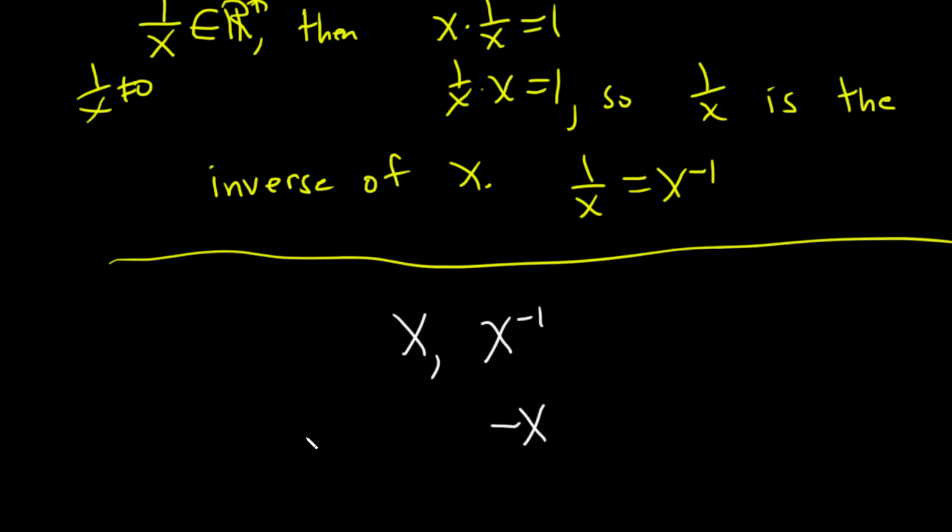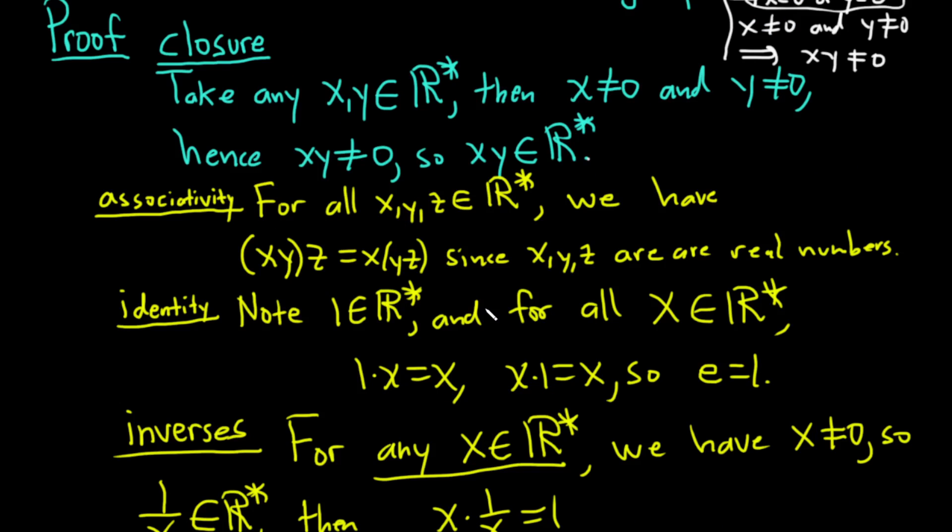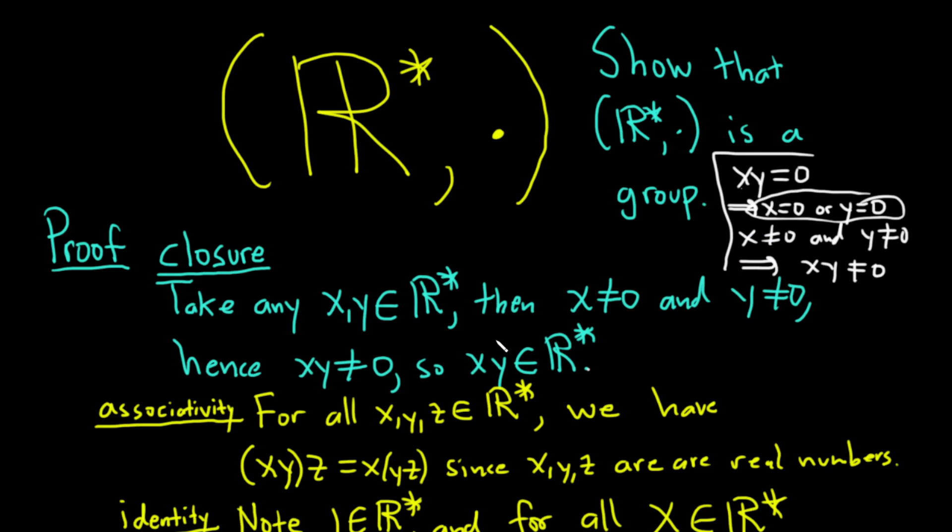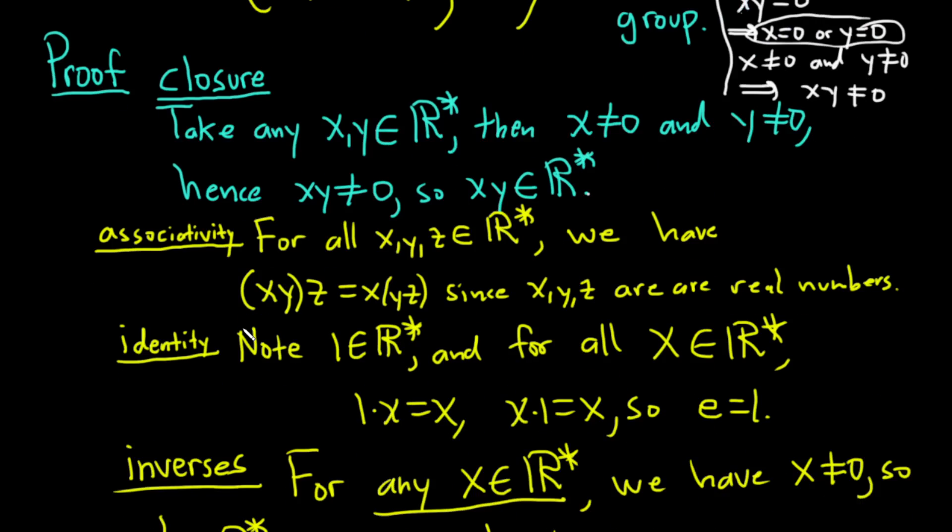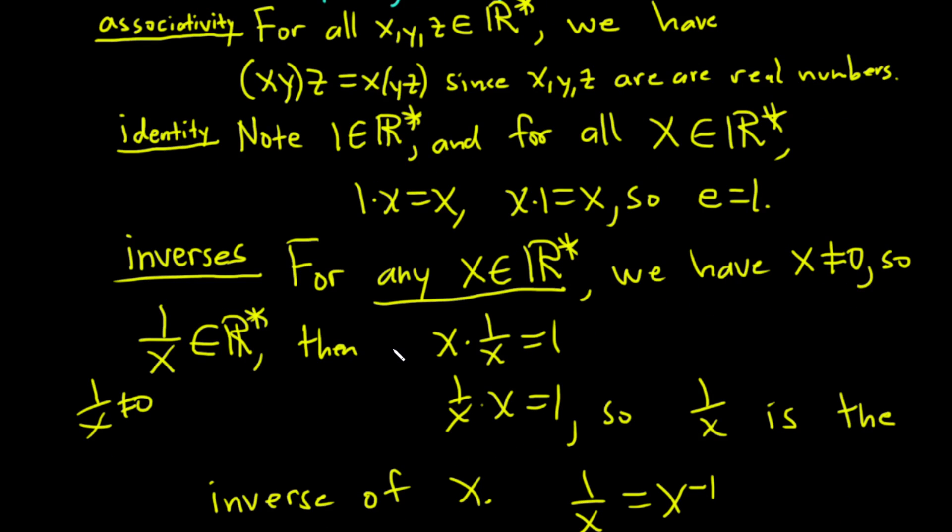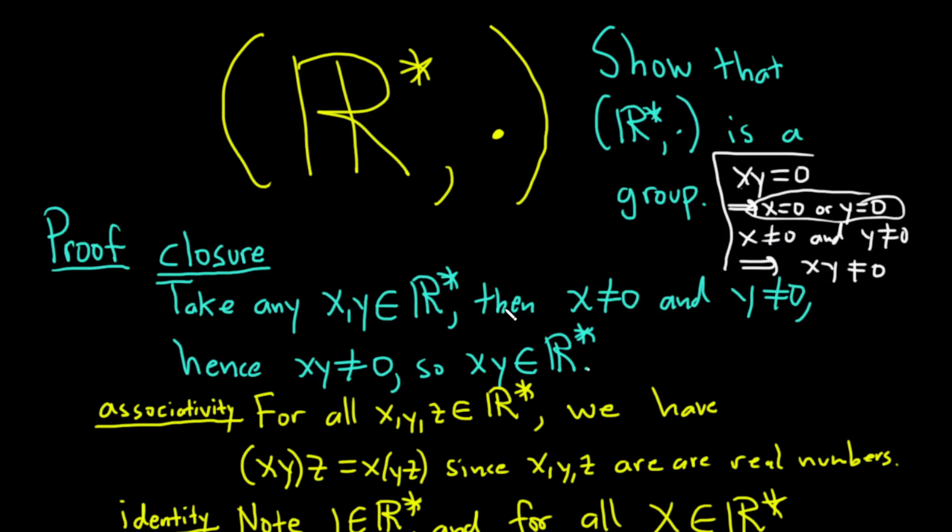In any case, we have shown that this is a group under multiplication. We have closure, we have associativity, we showed the existence of an identity element, and we showed that every single non-zero real number has an inverse. And so, yeah, just a simple proof that hopefully, after watching this video, you know something about groups. This is how you show that something is a group. Until next time, keep doing mathematics. And yeah, I hope it's been helpful. Take care.